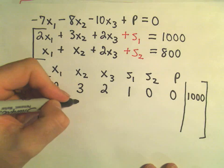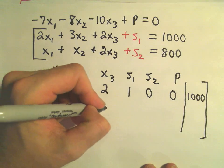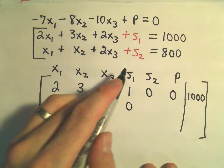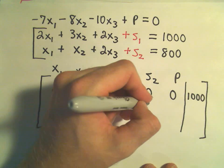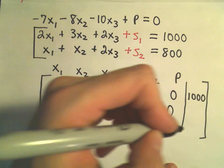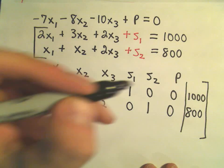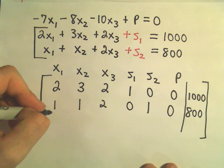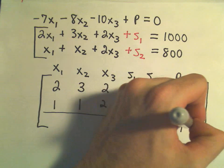Next we've got 1x1, we've got 1x2, we've got 2x3, we have zero s1s, we do have a 1 s2, again zero Ps, equals 800, and now usually they'll put a little dashed line, I'm just going to make a little solid line here.